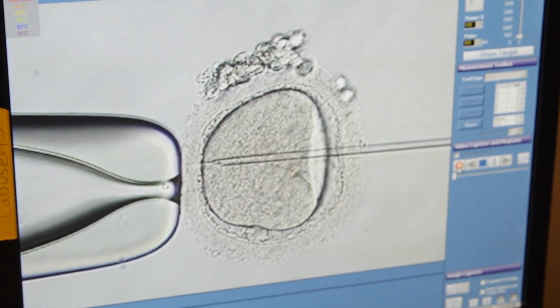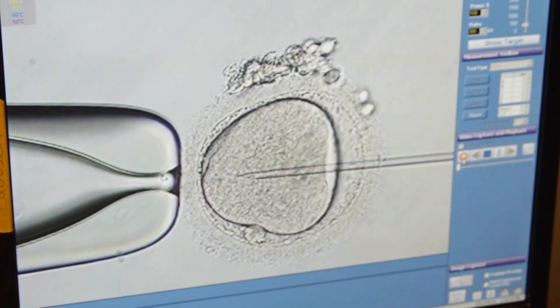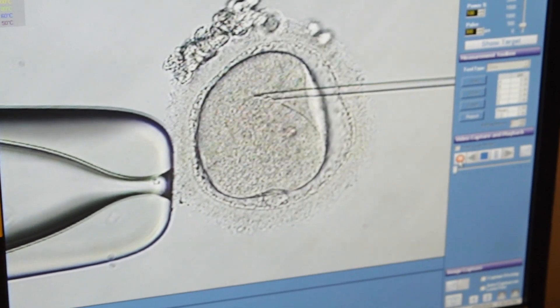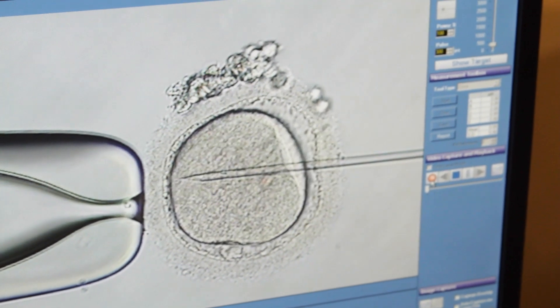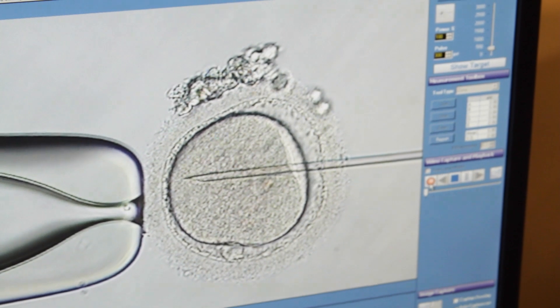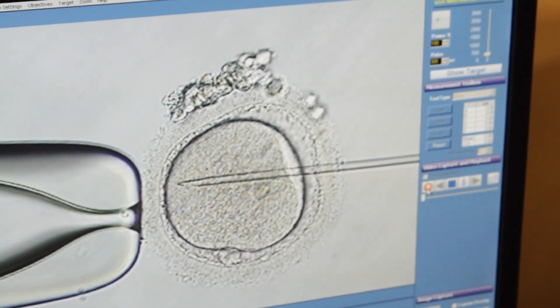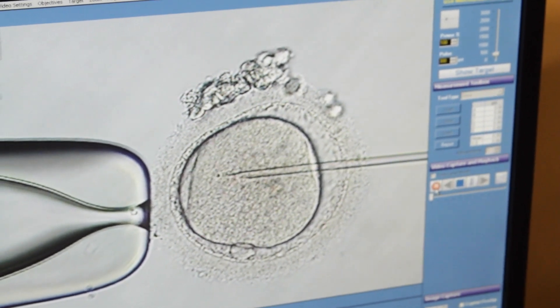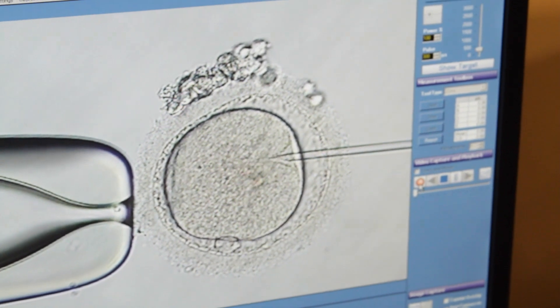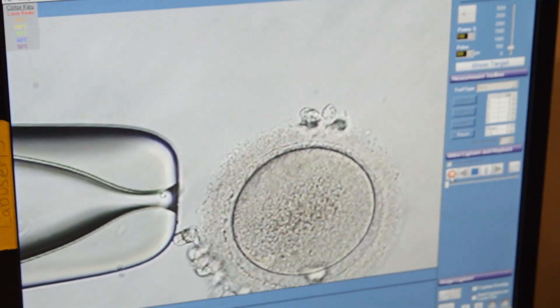Here at RMA of New York, we use a very gentle way of breaking the oolemma, which is the membrane of the egg. That's what Donna's doing there with the circular motion. We don't actually break it by sucking in the ooplasm, which is the standard method. Due to this, we have very low damage rates with ICSI, while other labs contend with up to five percent.